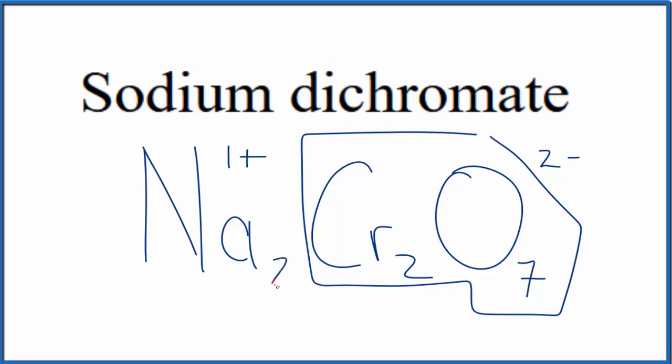So if we had 2 sodium atoms here, 2 times the 1+ would give us 2+, and that would balance out the 2-. So this is the formula for sodium dichromate, Na2Cr2O7.